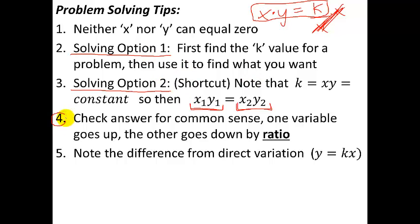OK, tip number four should be a no-brainer here. Always check your answer for common sense. So you know with inverse variation that one of them is going up and the other is going down by a same ratio. OK, so if you get the math wrong, then you look at your answer, you'll be able to easily see, wait, it didn't go up or down the way it was supposed to. So use the equation and the math to get the exact answer, but use common sense to get a ballpark estimate on what you think should be happening.